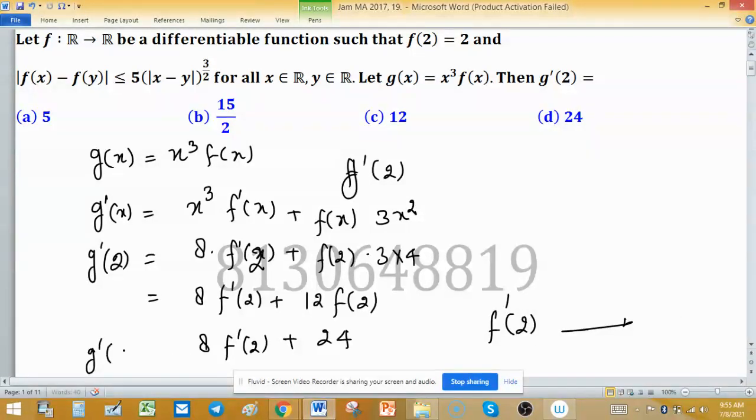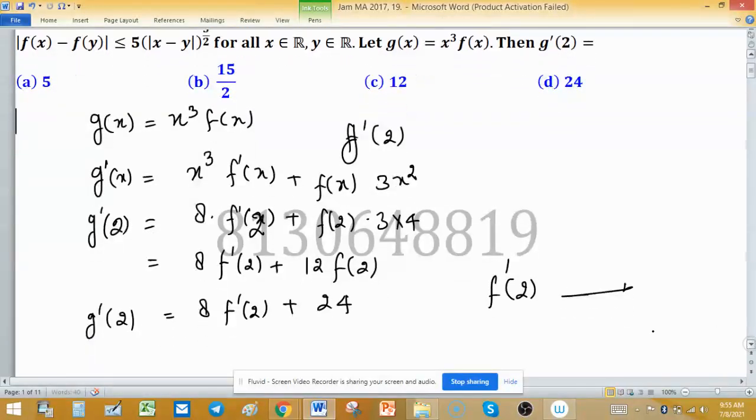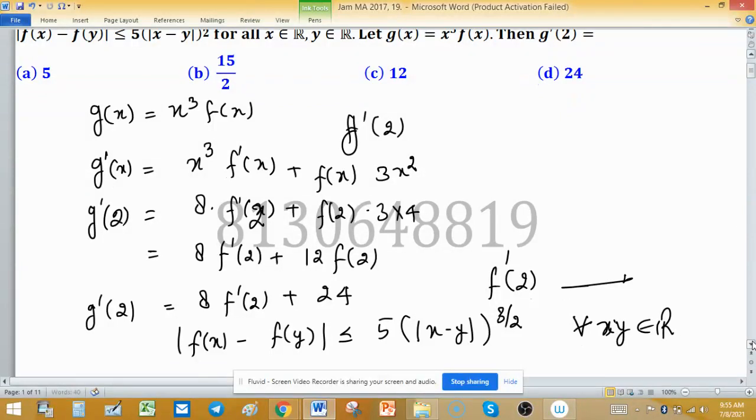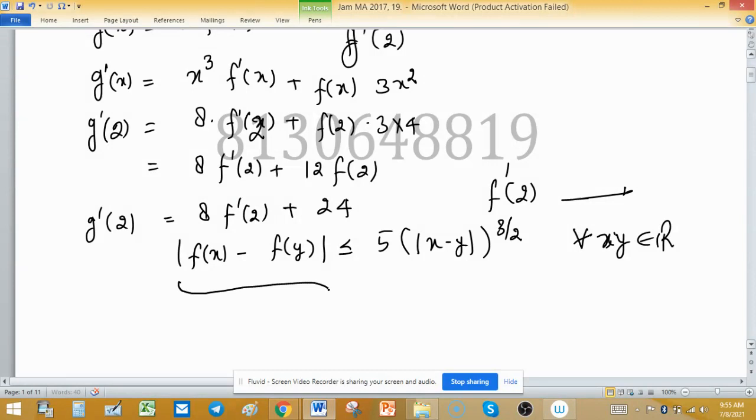How to find it? The given condition is an inequality: |f(x) - f(y)| ≤ 5(x - y)^(3/2), and it is true for all x, y which are coming from the set of real numbers.